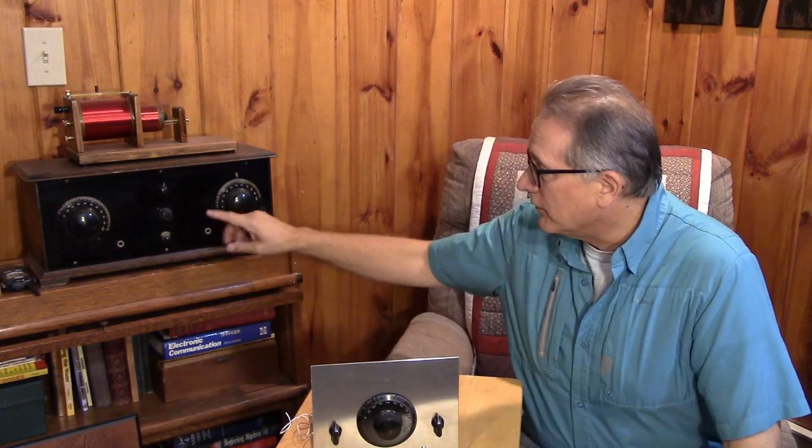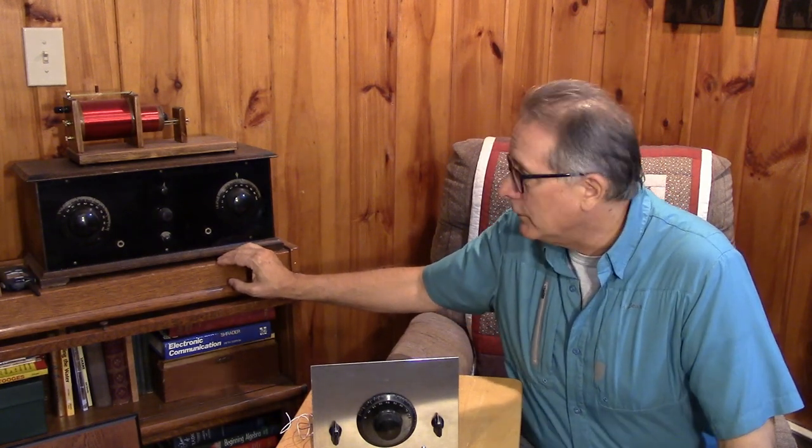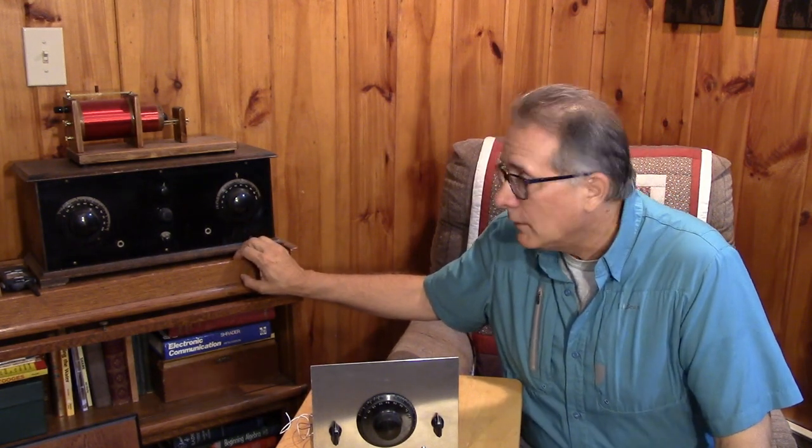Also, before we end this video, I wanted to show you this receiver over here. This is, in fact, a regenerative broadcast band receiver. This is from the early 20s and it uses the popular 01A triode tubes. It's one stage of regenerative and two audio amplifier stages. So regenerative receivers were quite popular in the 20s and very practical for the broadcast band.